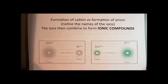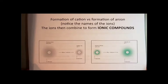So in order to have an ionic compound, you have to have a cation and an anion. And a cation is formed in this way.